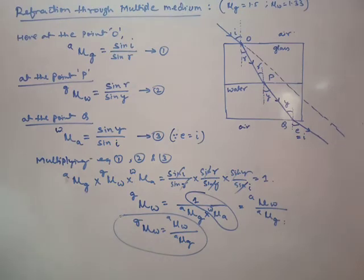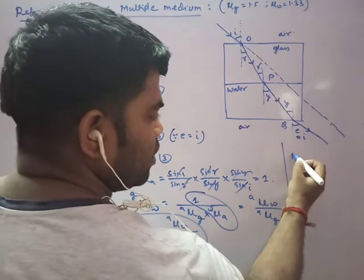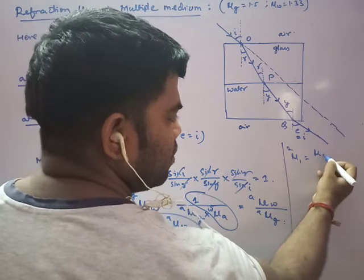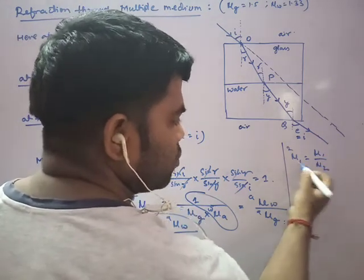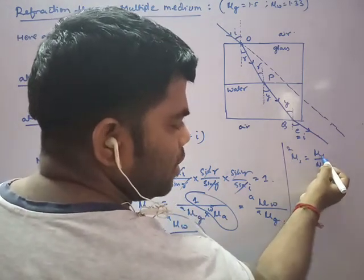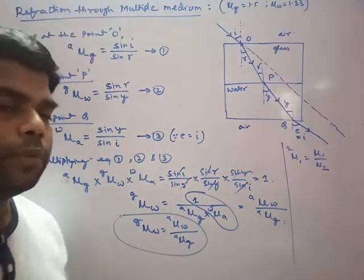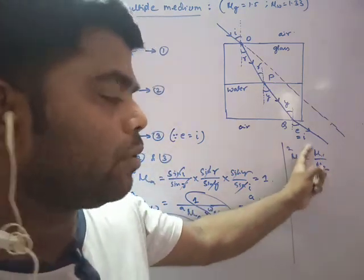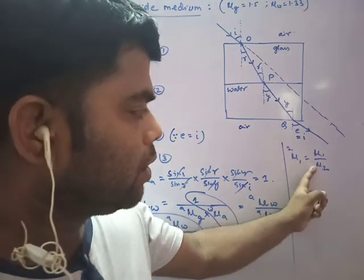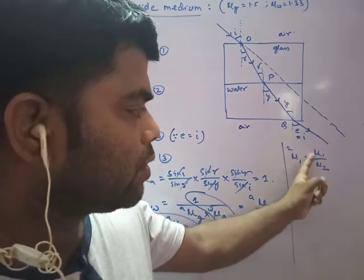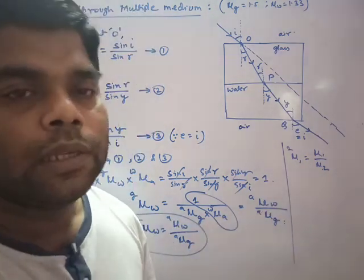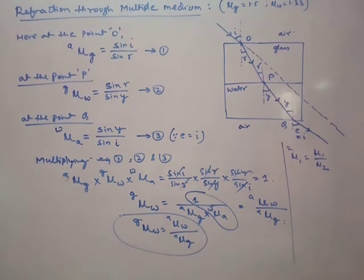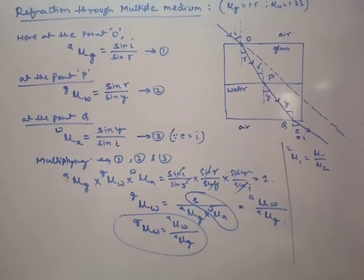In general, if we want the refractive index of medium 1 with respect to medium 2, we can write it as the refractive index of medium 1 divided by the refractive index of medium 2 — both with respect to air. This is the standard way of writing combined refractive index.